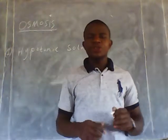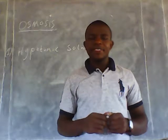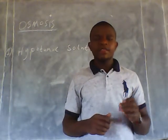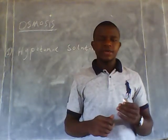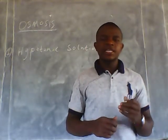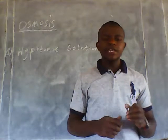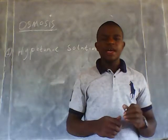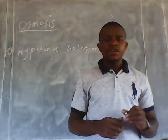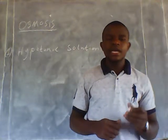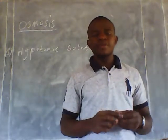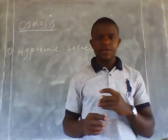A hypotonic solution is a solution that has a higher concentration of water than the cell. It is also referred to as a solution that has high water potential and a lower concentration of solutes. So when a cell is placed in this hypotonic solution, water molecules will move from the solution into the cell.